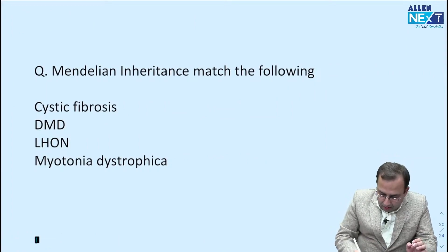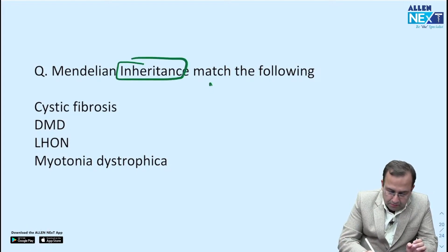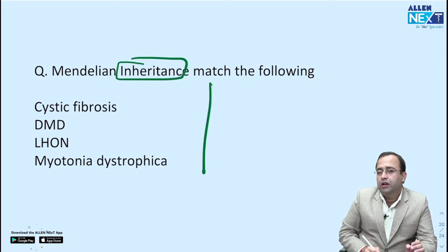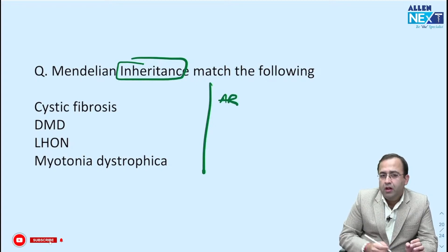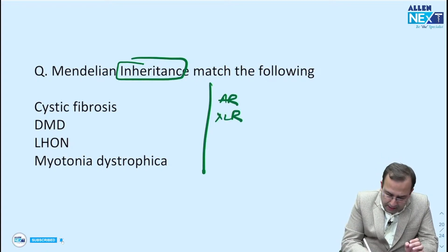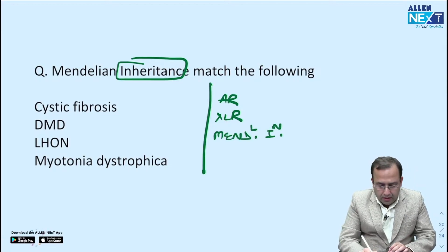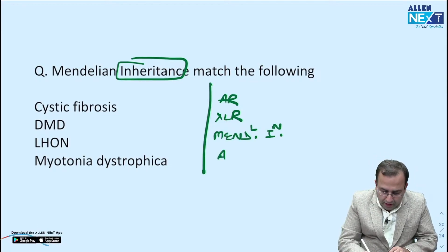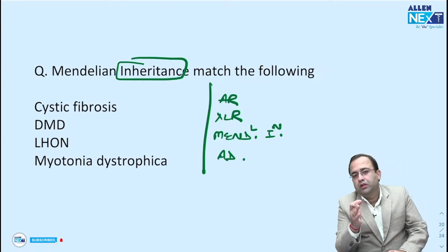Next — inheritance was given — match the following. Cystic fibrosis: autosomal recessive. Duchenne's muscular dystrophy: X-linked recessive. Leber's hereditary optic neuropathy: mitochondrial inheritance. Myotonica dystrophica: autosomal dominant. This was the match the following question.